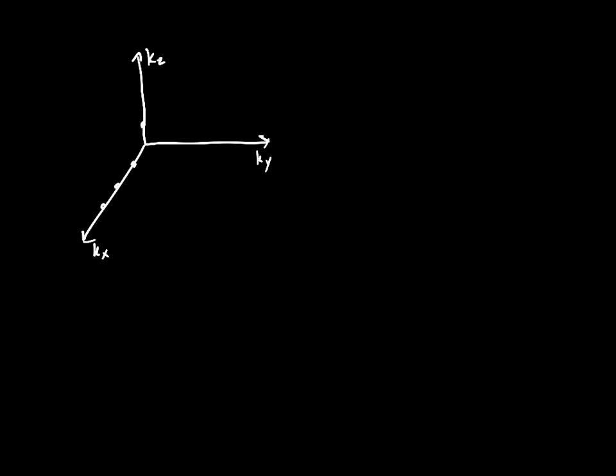And so we said that these states were spaced a certain distance, a distance of pi over l from each other. And so each of the states has a volume of pi over l cubed.